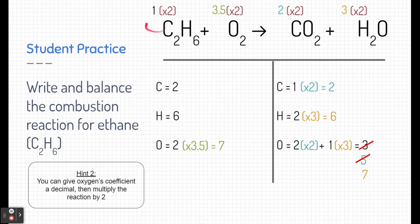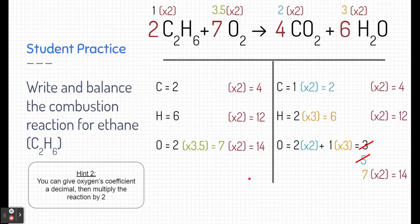I'm going to take my one ethane and multiply it by two, my three and a half oxygens and multiply it by two, my two carbon dioxides and multiply it by two, and my three waters and multiply it by two. When I do that, here are my new full integer coefficients. And if I multiply all of my reactants and products by two, then they're still balanced and I'm still able to write a complete balanced combustion reaction. So this is the second hint you can use for combustion reactions where oxygen isn't easily multiplied.